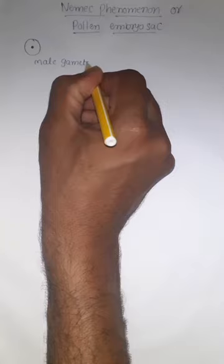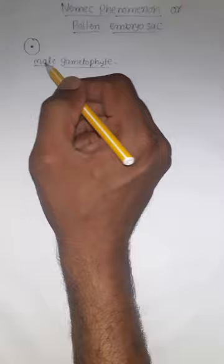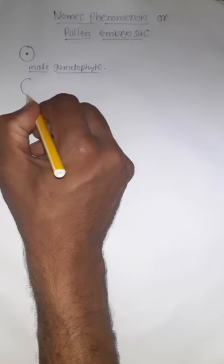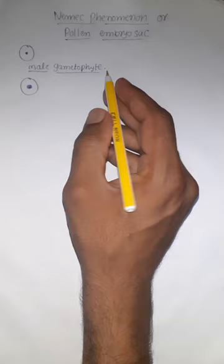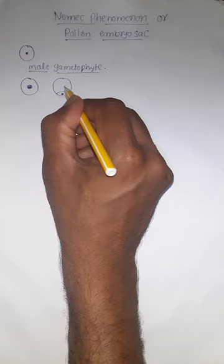We already discussed about development stages of these pollen grains. Now, briefly, we will see once again. Usually what is the function of male gametophyte? Male gametophyte or pollen grain having one nucleus initially. Whenever they undergo development stages, the nucleus divided into two cells. One is small cell that is generative cell.